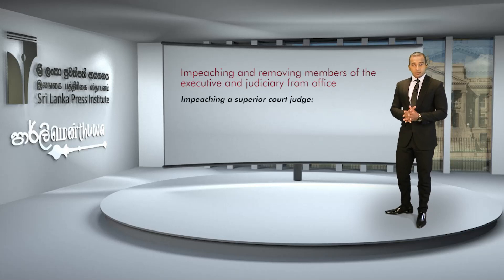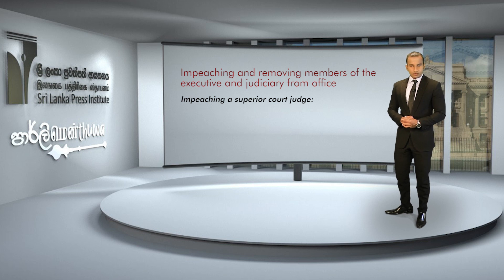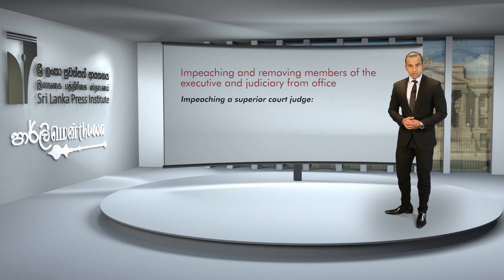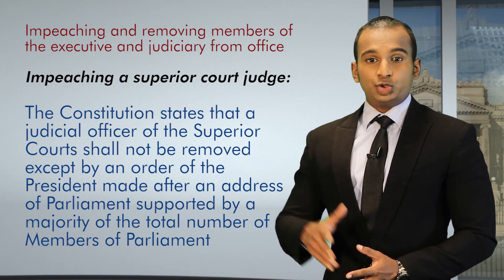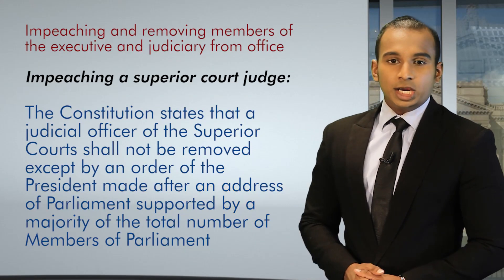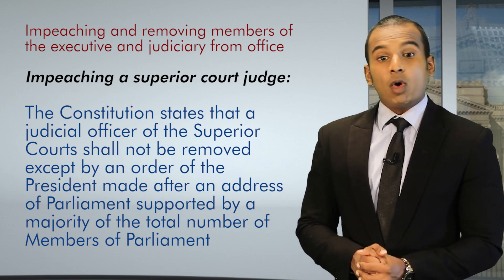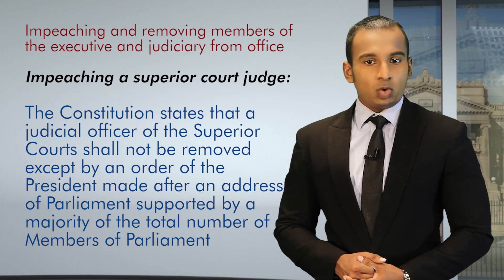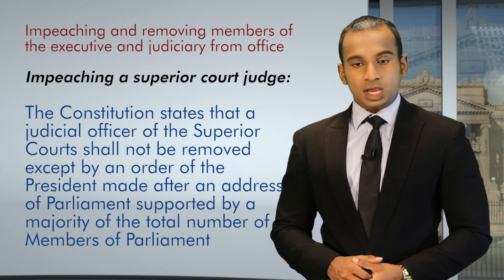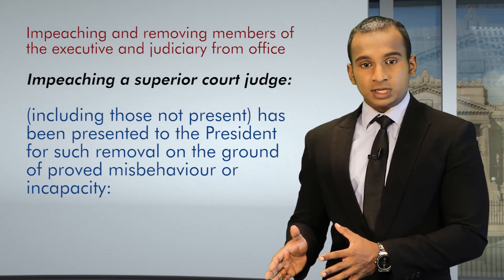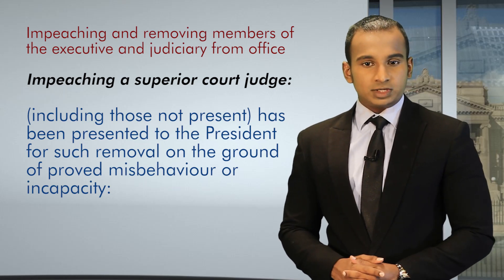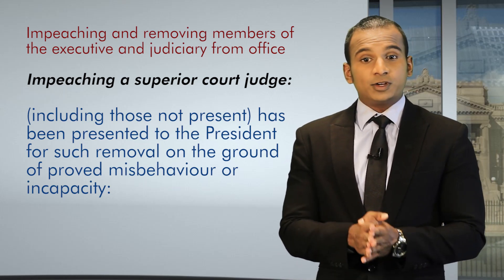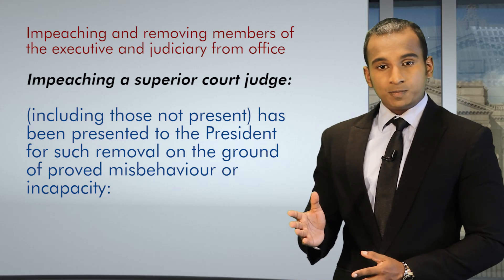Let's now focus on the procedure of impeaching and removing members of the Executive and Judiciary from office. Regarding the impeaching of a Superior Court Judge, the Constitution states that a judicial officer of the Supreme Court shall not be removed except by an order of the President made after an address of Parliament supported by a majority of the total number of members of Parliament, including those not present, presented to the President on grounds of proved misbehaviour or incapacity.